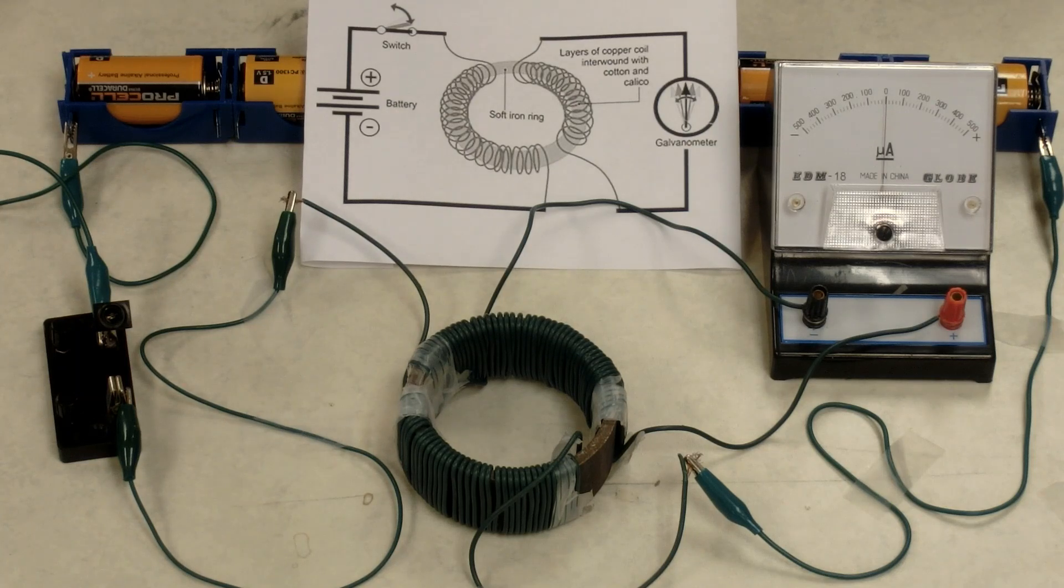Oersted's discovery in 1820 that a magnetic field circles a current-bearing wire led to many inventions, but also led to the question: if charge in motion, which is electric current, produces magnetism, can magnetism be used to produce charge in motion, electric current? Can magnetism create electric current or electricity?